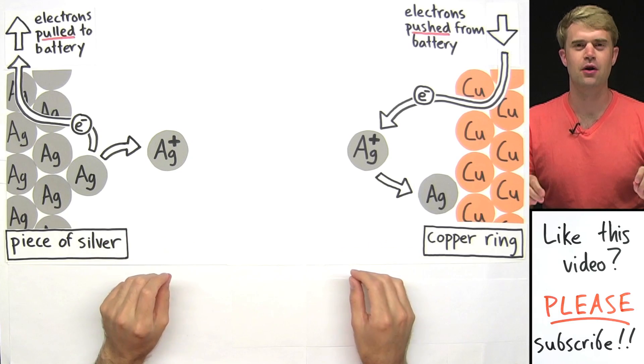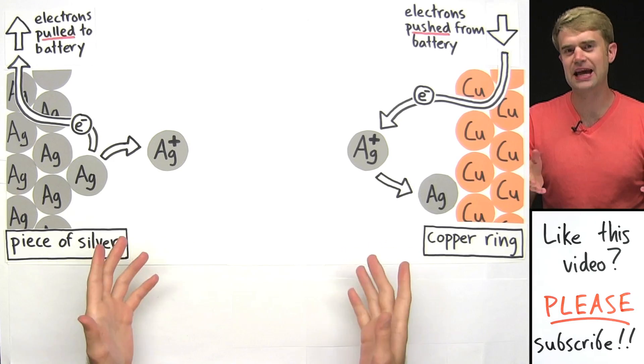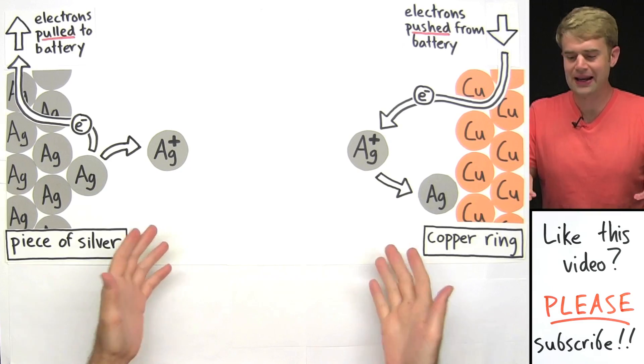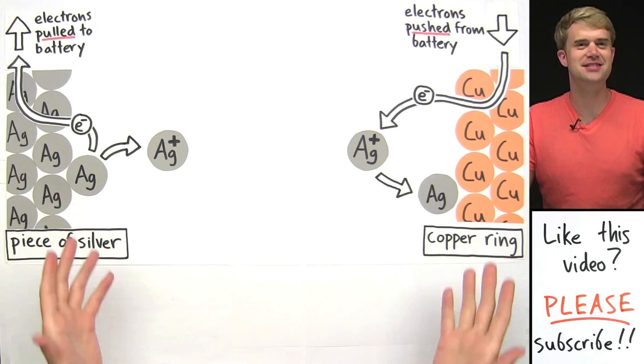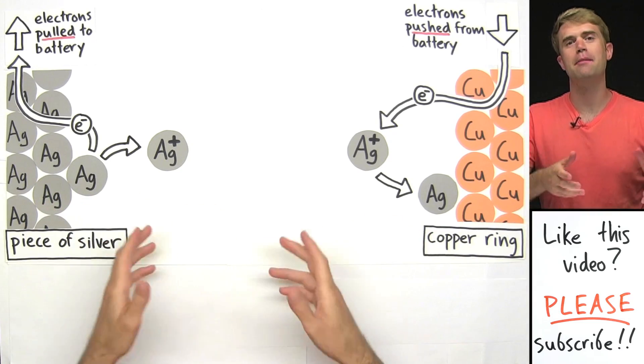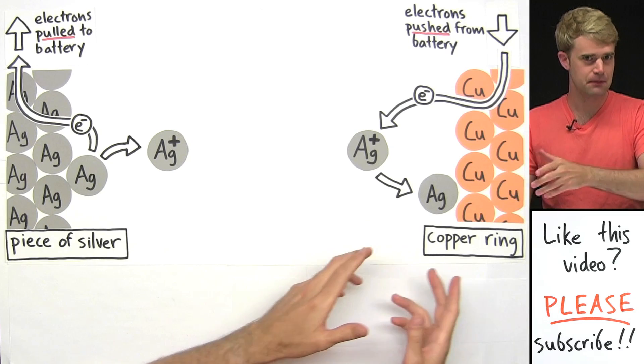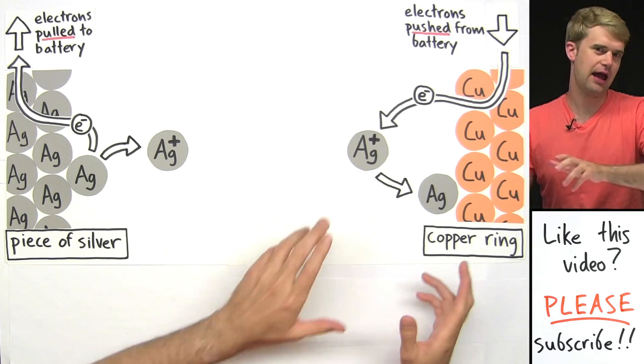In the second part of this video, we'll talk about some more of the details of electroplating. We'll write chemical equations for the processes that are happening here, and we'll talk about oxidation and reduction, anodes and cathodes.